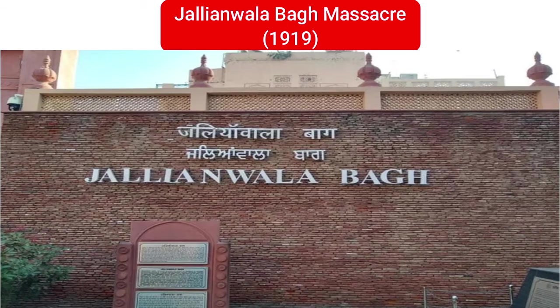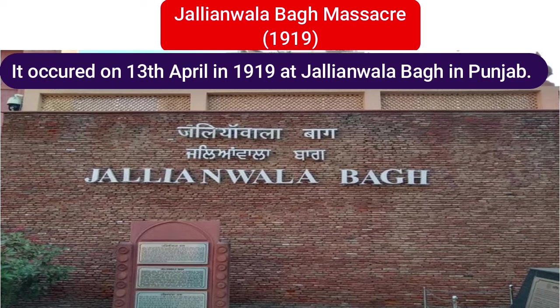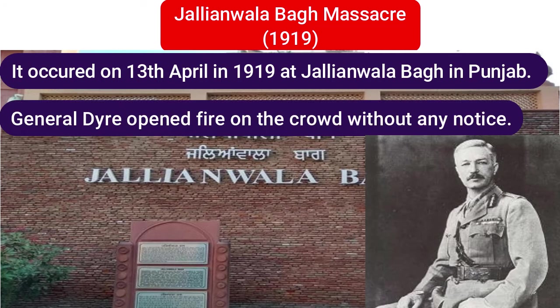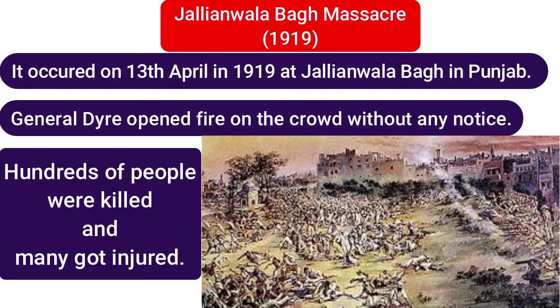Jallianwala Bagh Massacre in 1919. It occurred on 13th April 1919 at Jallianwala Bagh in Punjab, when General Dyer opened fire on the crowd without any notice. Hundreds of people were killed and many were injured. This shocked the country and changed the tone of the freedom movement in India.